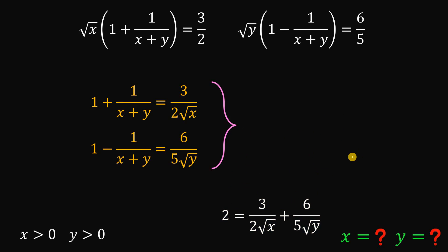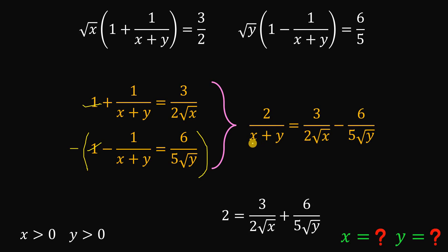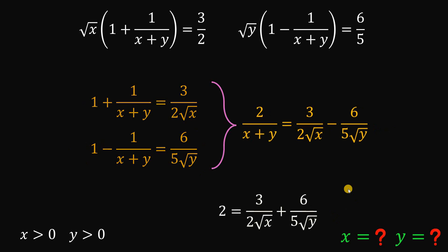Instead of adding, let's subtract these two equations. When we subtract, the positive 1 and negative 1 cancel out, leaving 0 on that side. So when we subtract, we get 2 over (x plus y) equals 3 over 2 times square root of x minus 6 over 5 times square root of y. We will now focus on these two results.